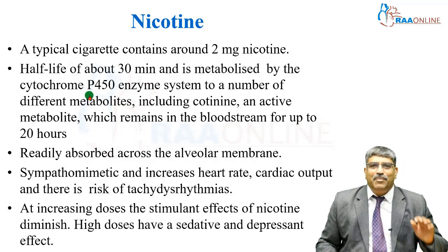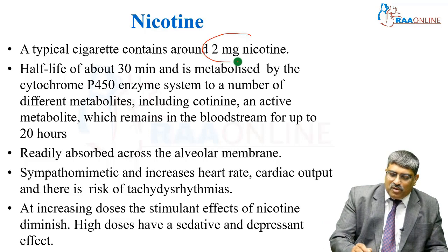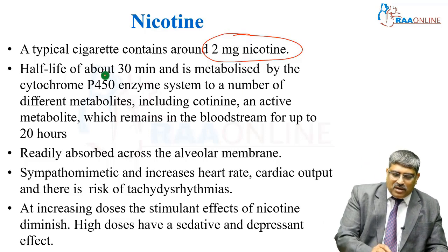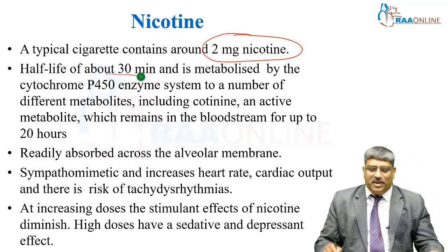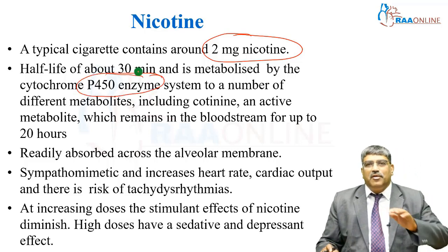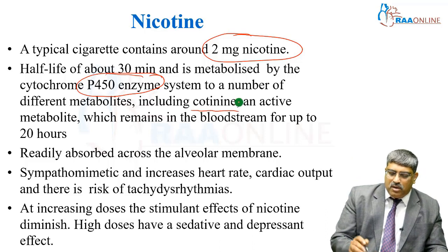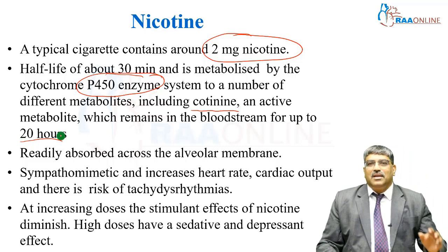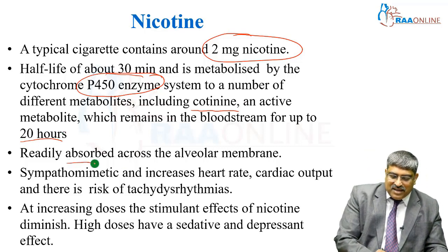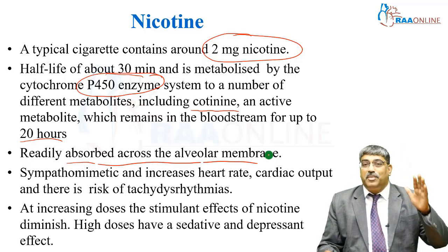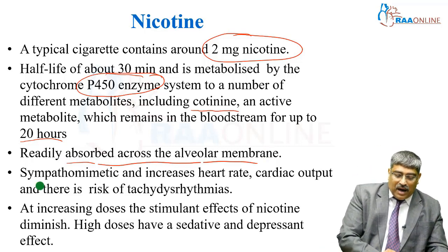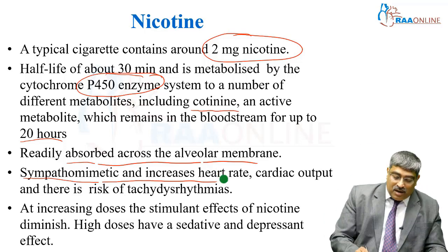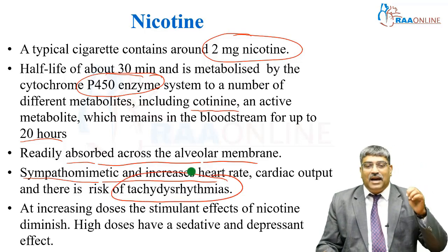Coming to nicotine — a typical cigarette almost contains about 2 milligrams of nicotine. The half-life of nicotine is about 30 minutes and it is metabolized by cytochrome P450 to various constituents. The most important metabolite remains in the bloodstream for about 20 hours. This nicotine is readily absorbed across the alveolar membrane, which plays a very big role in lung injury. The sympathomimetic effect of nicotine increases the heart rate, cardiac output, and there is a risk of tachyarrhythmias.